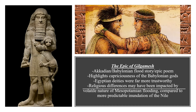Gilgamesh is the king of Uruk. He is said to be two-thirds god and one-third man. Although he is mostly god, the other gods do not trust Gilgamesh — they find him dangerous and are afraid of his power. As a result, one of the gods named Enki creates a bull-man hybrid called Enkidu, who is supposed to fight Gilgamesh and keep him busy so that he cannot threaten the gods. Enkidu and Gilgamesh fight, but instead of becoming enemies, they become friends.